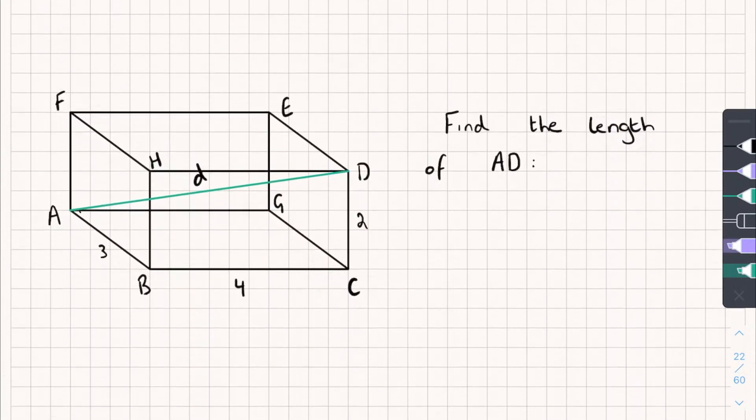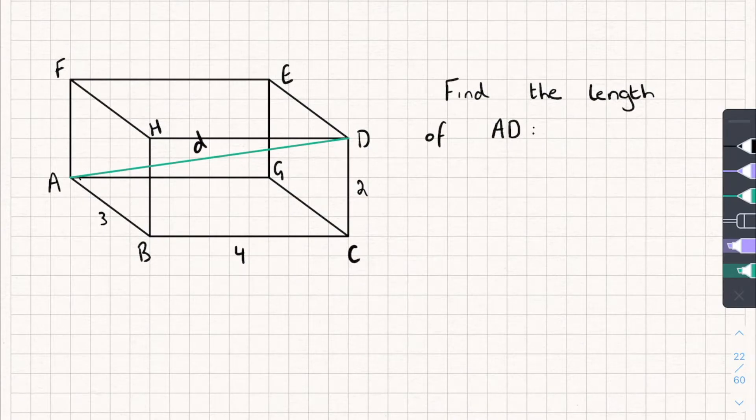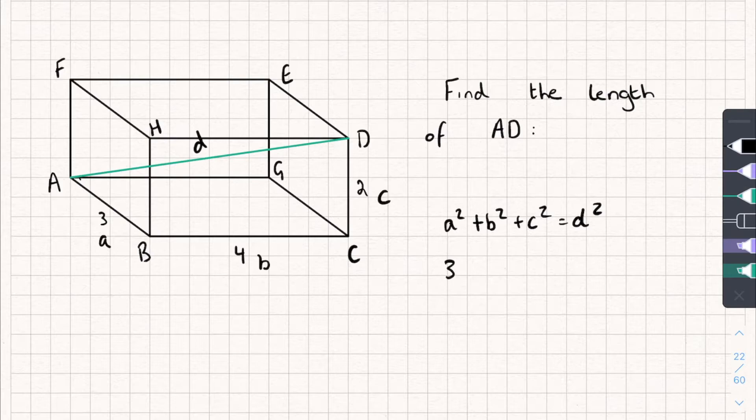So let's use it in an example. Here we go. We've got a very similar shape, and we need to find the length AD. And this length AD, I've labelled up D there. So, very similar to before, I'm going to call this A, I'm going to call this side B, and this side C. And the formula tells me if I do A squared plus B squared plus C squared, it's going to equal D squared. So let's do it. We've got 3 squared plus 4 squared plus 2 squared, and that equals D squared.